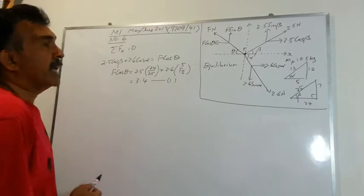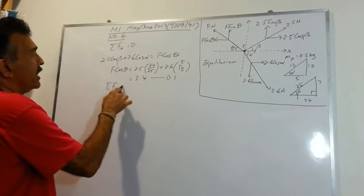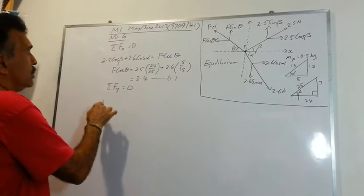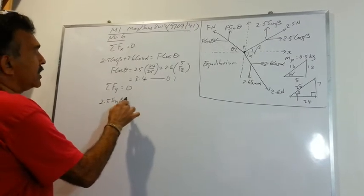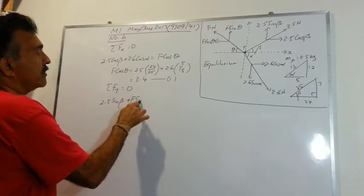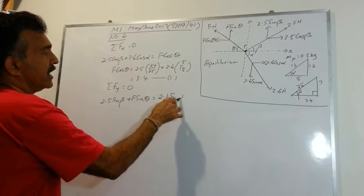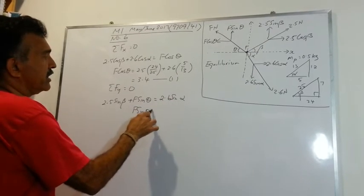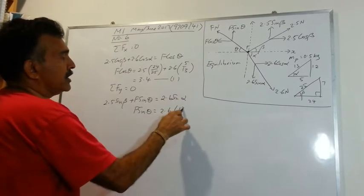Use a calculator to help you along. And then let's look at the sum of forces in the y direction is 0. So we will have 2.5 sin beta plus F sin theta will be equal to 2.6 sin alpha.